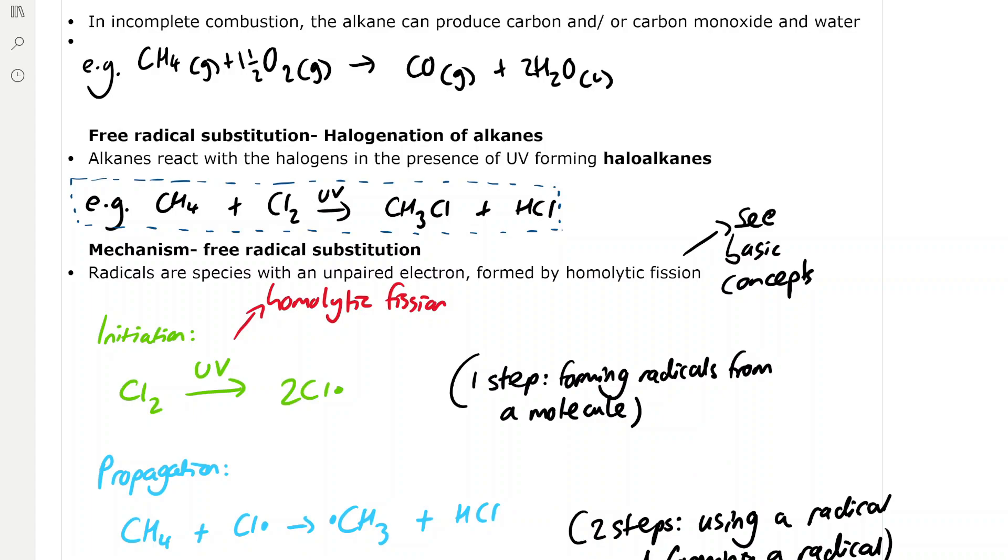In incomplete combustion, the alkane can produce carbon and/or carbon monoxide and water. Water is always produced but CO2 isn't made because it's incomplete combustion, which usually happens when there's an insufficient supply of oxygen. For example, methane reacts with 1.5 moles of oxygen to form carbon monoxide and two molecules of water.